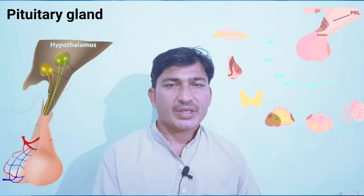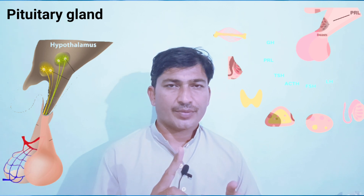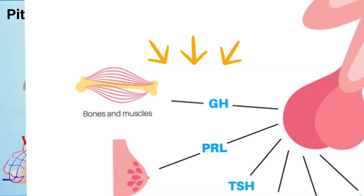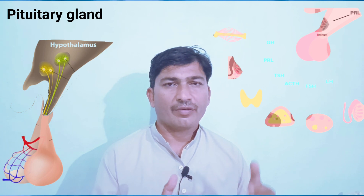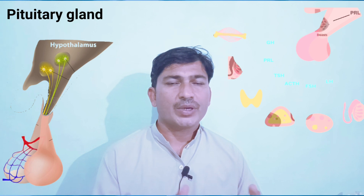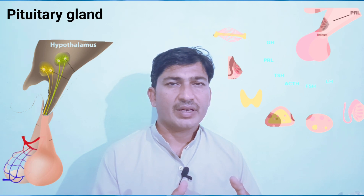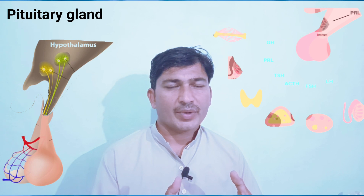Beside the four trophic hormones, there are two other hormones of the anterior pituitary gland. The first is somatotropin hormone, also known as GH or growth hormone. This hormone helps us grow — its target sites are our muscles and bones, making them enlarge so that we grow. When this hormone is released we grow; when it is not released we become short or dwarf. When this hormone is too much in our body we become very tall, and when it is very less we become a dwarf.